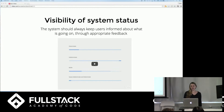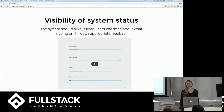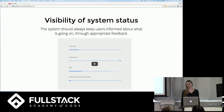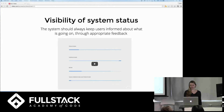The first one is visibility of system status. The system should always keep users informed about what's going on through appropriate feedback. One implementation of this is progress bars. They let the user know that the system is still there and give an approximate estimation of how much longer a task may take.